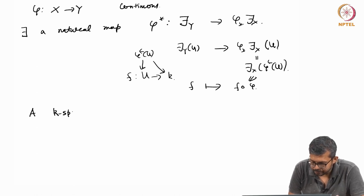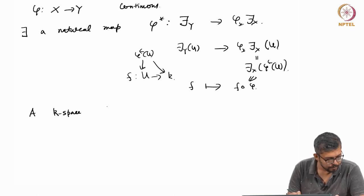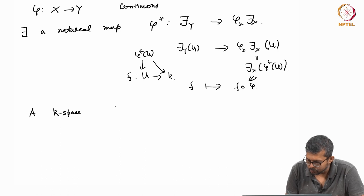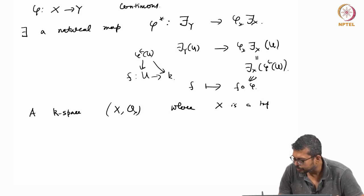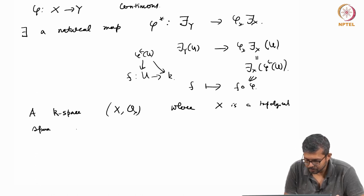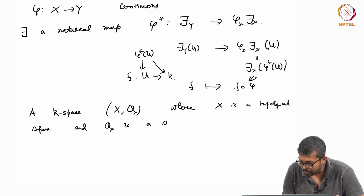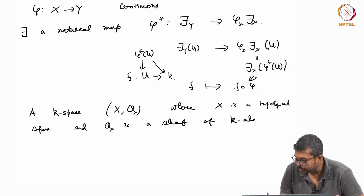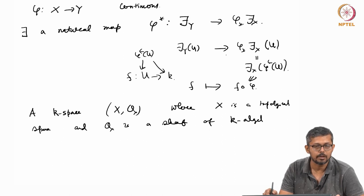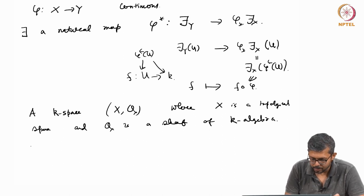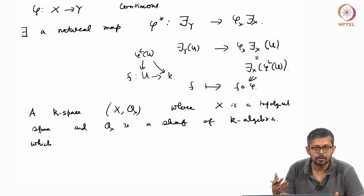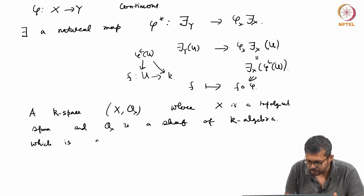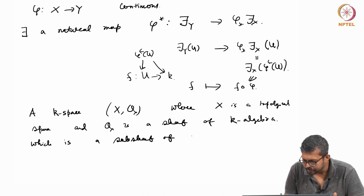A K-space is defined as a pair (X, OX), where X is a topological space and OX is a sheaf of K-algebras. Note that here I am assuming OX is a K-algebra - unlike F(X) which was just a sheaf of sets. OX is a sheaf of K-algebras which is a subsheaf of F(X) as a sheaf of sets.